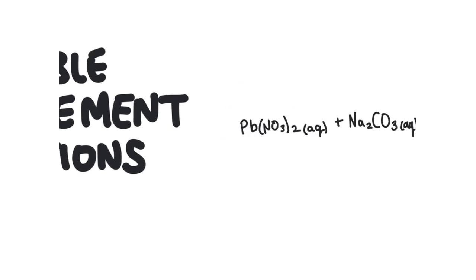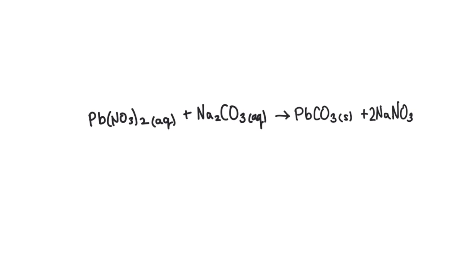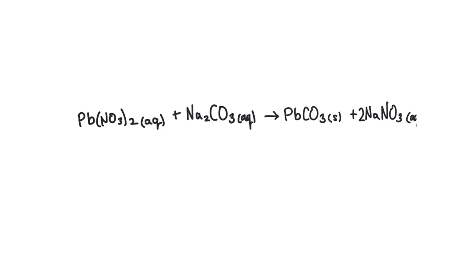In this video we're going to learn about double displacement reactions. Double displacement reactions are reactions that involve two ionic compounds. These are ionic compounds because they involve a cation, which is a metal, and an anion, which is made up of non-metals.